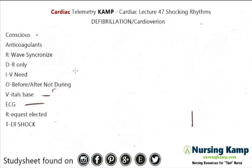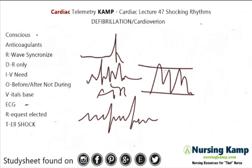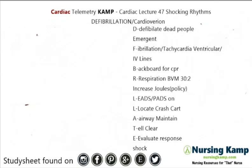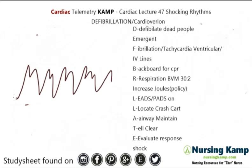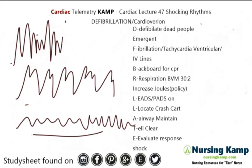Now let's talk about defibrillation. Cardioversion is for elected, live patients — those who have AFib, SVT, atrial rhythms mainly, A-flutter, and sometimes VTAC with a pulse. Defibrillation is for dead patients — patients who require shocking. The rhythms you defibrillate are VTAC monomorphic, VFib, and Torsades polymorphic. These are definitely emergent situations — patients who have no pulse.